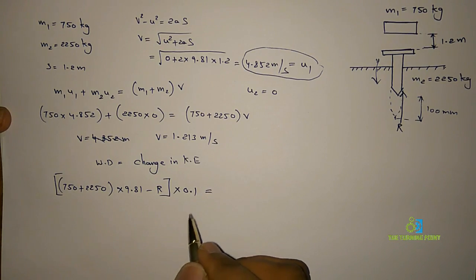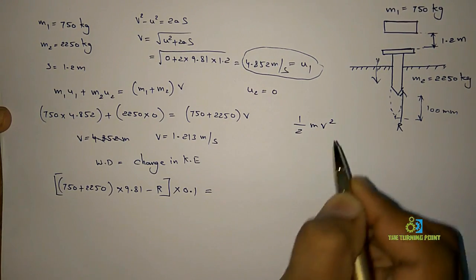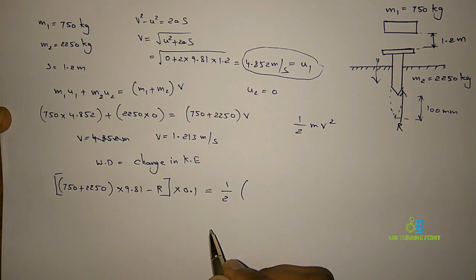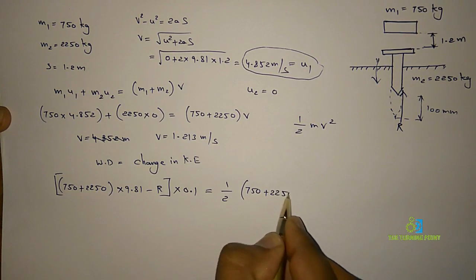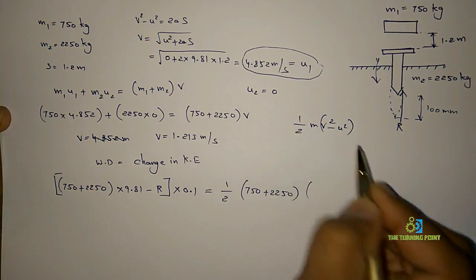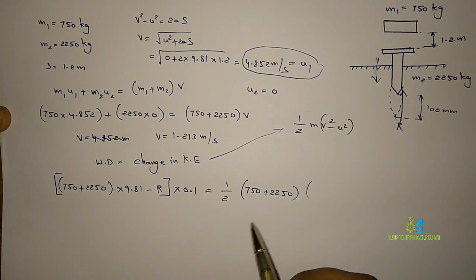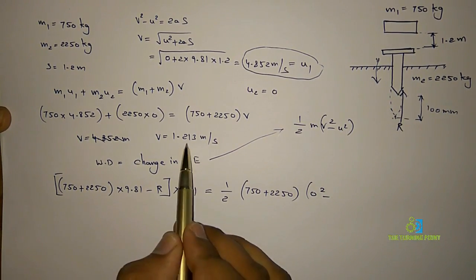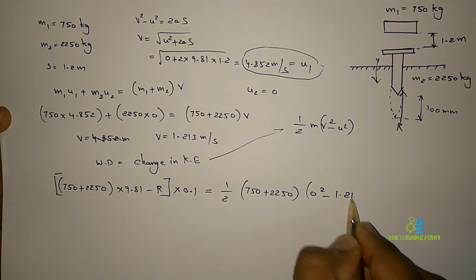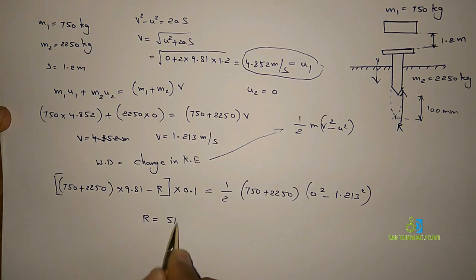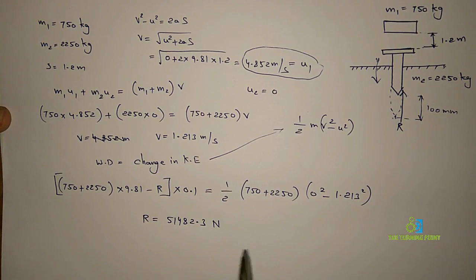Work done equals change in kinetic energy: (W - R) × 0.1 = ½ × (750 + 2250) × (V² - U²). Here the final velocity V = 0 and initial velocity U = 1.213 m/s. When the pile reaches its final point, the final velocity is zero and it was driven with 1.213 m/s. Solving for R gives approximately 51,482.3 Newtons. This is the resistance to penetration of the ground.